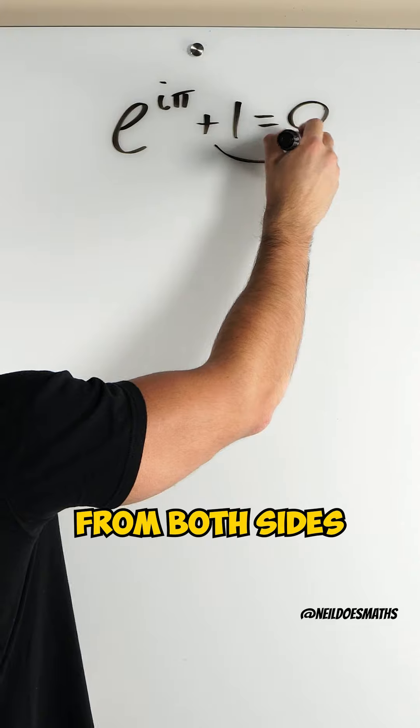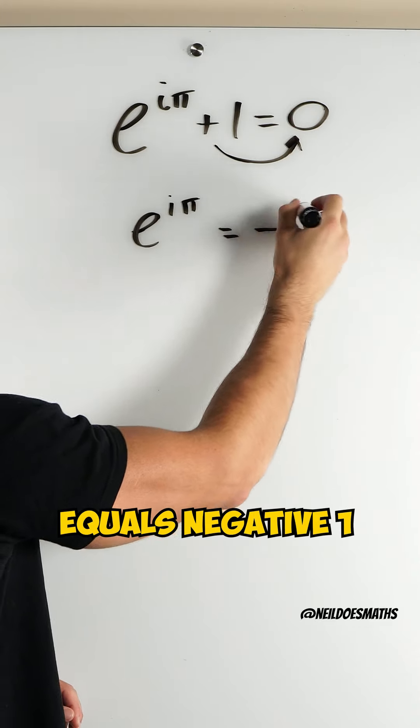The first thing I'm going to do is subtract 1 from both sides. So I get e to the i pi equals negative 1.